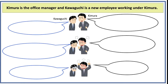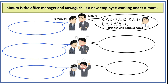Now, let's take a look at this dialogue between Kimura, an office manager, and Kawaguchi, who works under Kimura. Kimura says, Tanaka-san ni denwa shite kudasai — Please call Tanaka-san. Kawaguchi replies, Hai, wakarimashita — Understood.